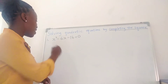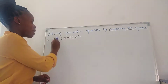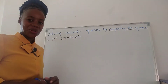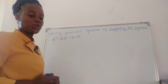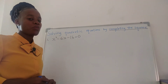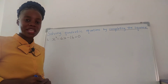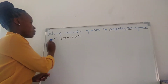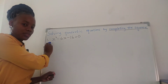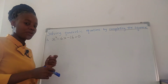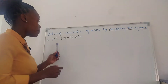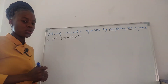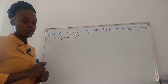Number 1, we have x squared minus 6x minus 16 equals to 0. So when you complete the square, you're supposed to make sure that the coefficient of x squared is 1. If it's not 1, we factor out. But for number 1, the coefficient is 1, so we're just going to complete the square.